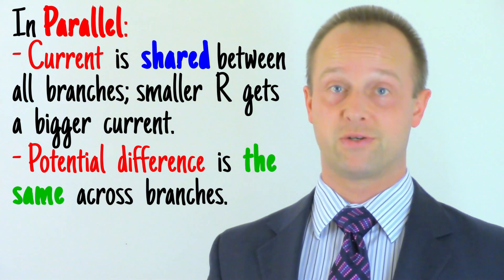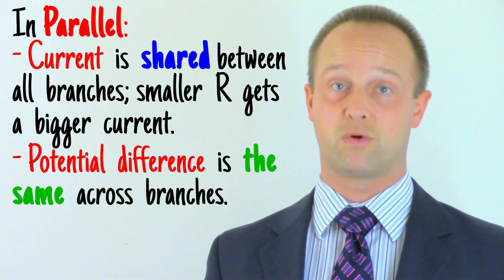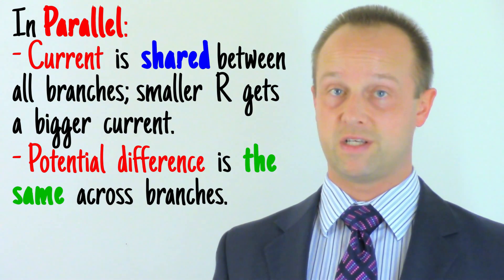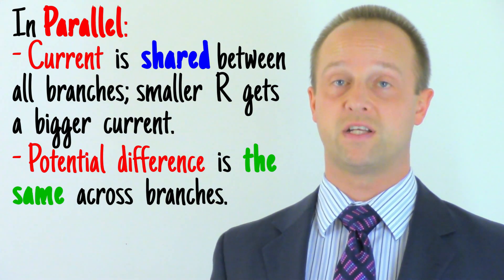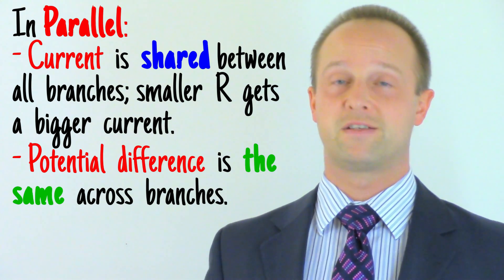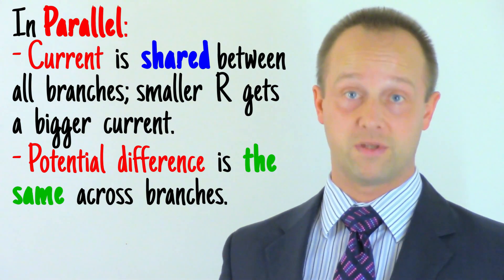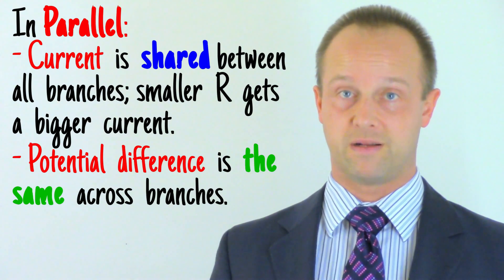In series, it was the potential difference which got shared across the components, with bigger resistances getting a bigger share, but in parallel, the potential difference is the same across each of the branches. So those two properties are kind of the opposite of one another in series and in parallel.